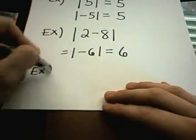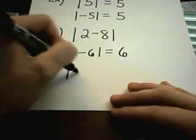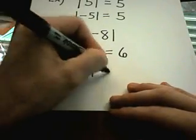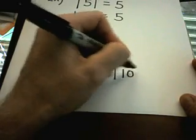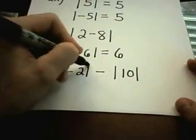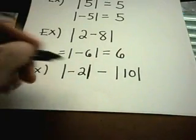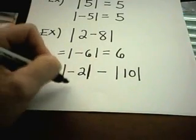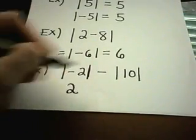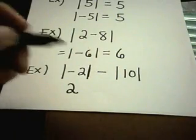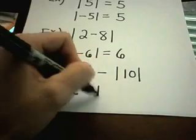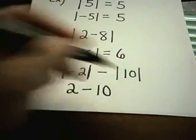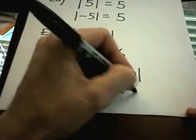Suppose I have the absolute value of negative 2 minus the absolute value of 10. The absolute value of negative 2 just turns into positive 2. The minus sign stays the minus sign. It's not inside the absolute value bars. And then the absolute value of 10 is 10. And 2 minus 10 equals negative 8. And that's your solution.